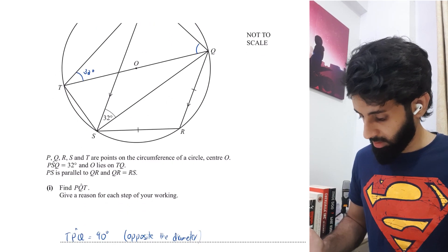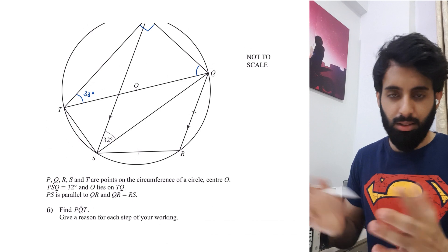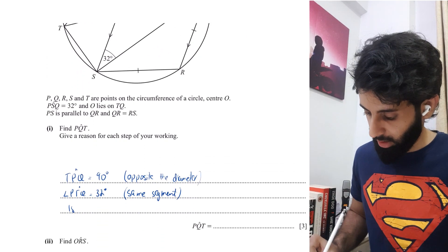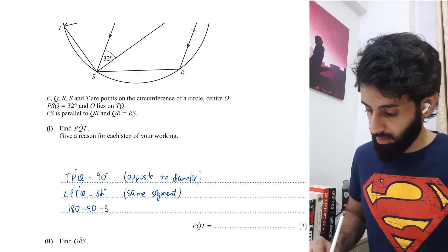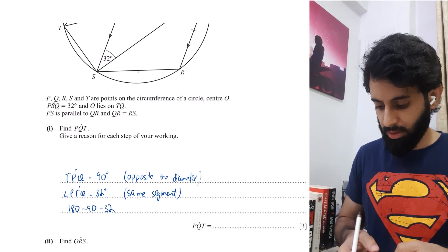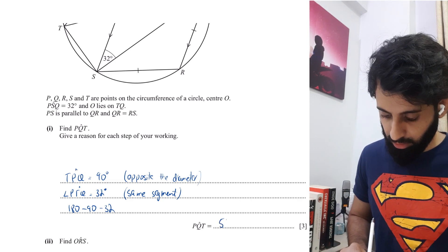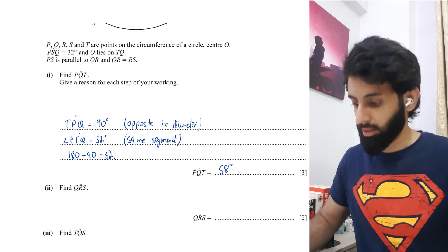Now with that, that's enough for us to work out PQT. All we do is 180 minus 90 minus 32. Let's work this out. So that's going to be 58 degrees. There you go. 58 it is - that's the correct answer.